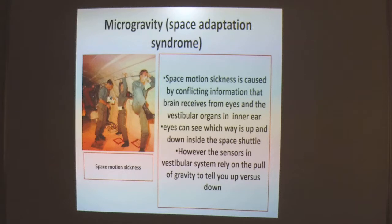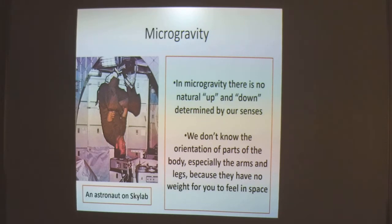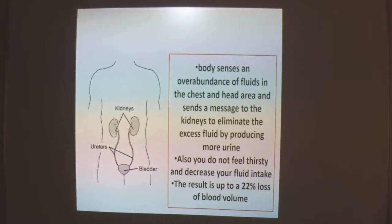In microgravity, there is no natural up and down determined by our senses, so we don't know the orientation of our arms and legs because they have no weight. The body senses an overabundance of fluid in the chest and head area and sends a message to the kidneys to eliminate the excess fluid by producing more urine. Also, one does not feel thirsty and fluid intake decreases. This results in a maximum loss of up to 22% of blood volume from the body.